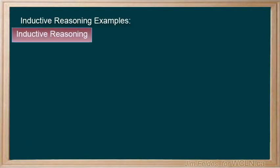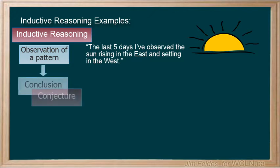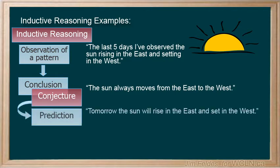With such a variety of patterns to observe, some are easier than others to form conjectures about. What conjecture would we come up with for this pattern? The last five days, I have observed the movement of the sun rising in the east and setting in the west. Our conjecture would be something like, the sun always moves from the east to the west. And we could make the prediction, tomorrow the sun will rise in the east and set in the west.